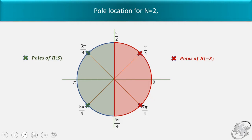Here, red color indicates the right-hand side of the s-plane and green color indicates the left-hand side. As we know, poles in the left-hand side plane give a stable system. So we define the left-hand side poles as belonging to H(s), and the right-hand side poles belong to H(-s).